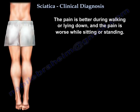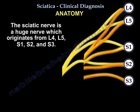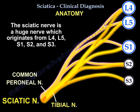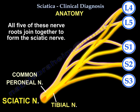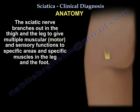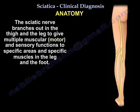The patient may have low back pain, but that's not as severe as the leg pain. The sciatic nerve has five nerve roots: two from the lumbar spine — L4 and L5 — and three from the sacral spine — S1, S2, and S3. All five nerve roots bundle together to form the sciatic nerve, which then branches out again in the thigh and leg to provide motor and sensory functions to specific areas and muscles of the leg and foot.